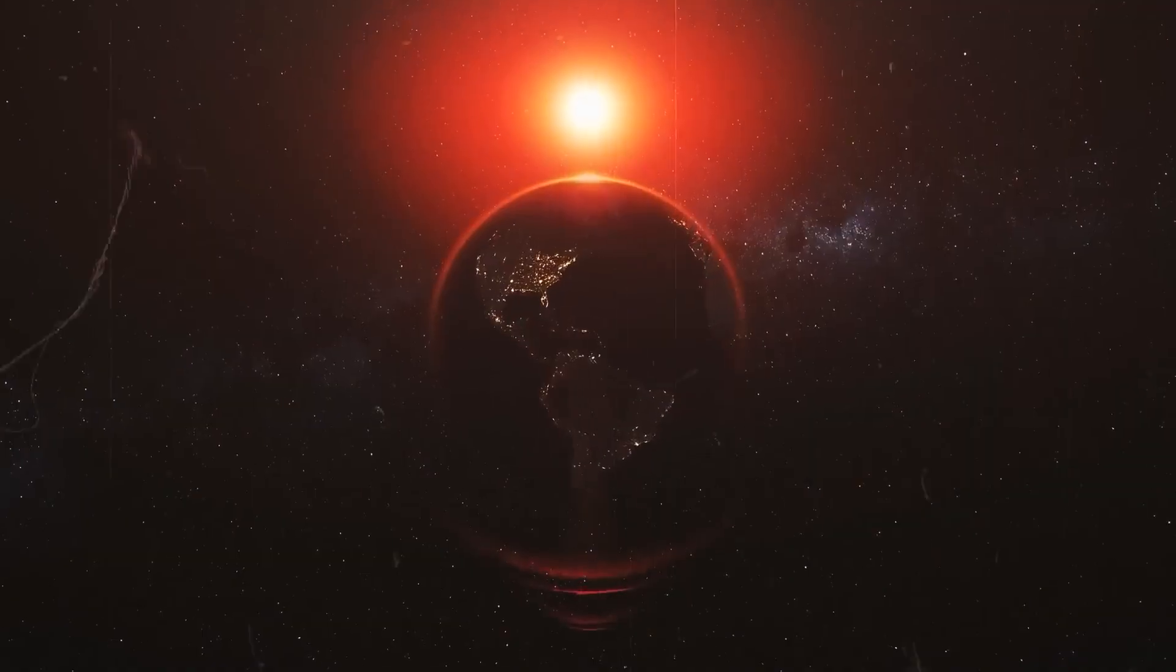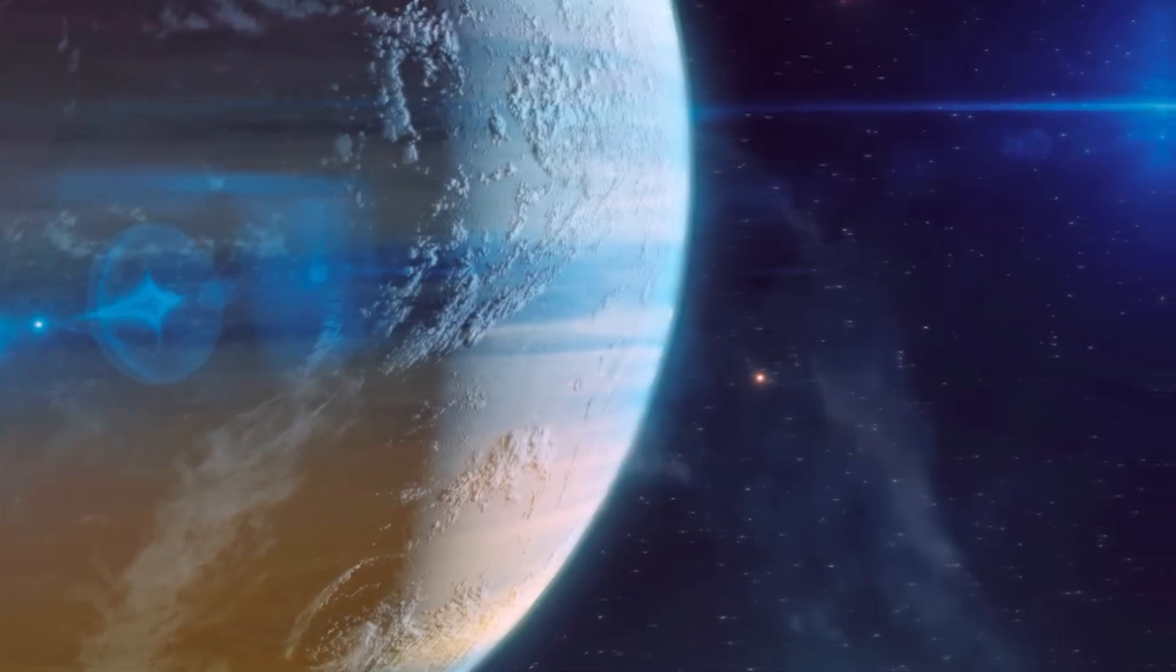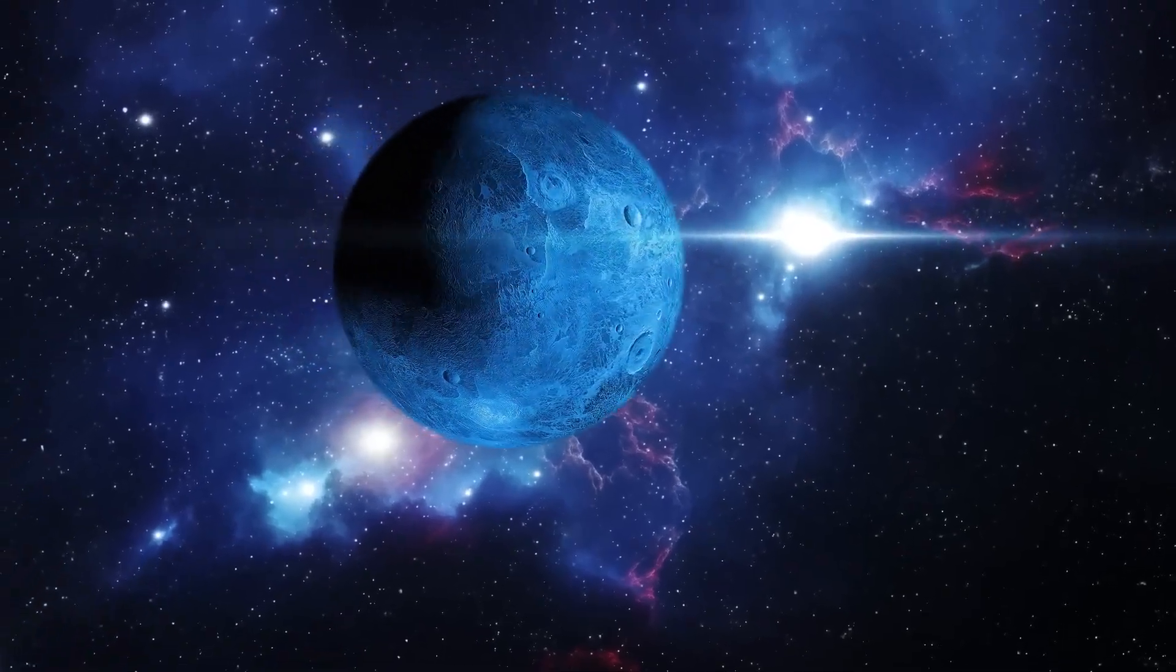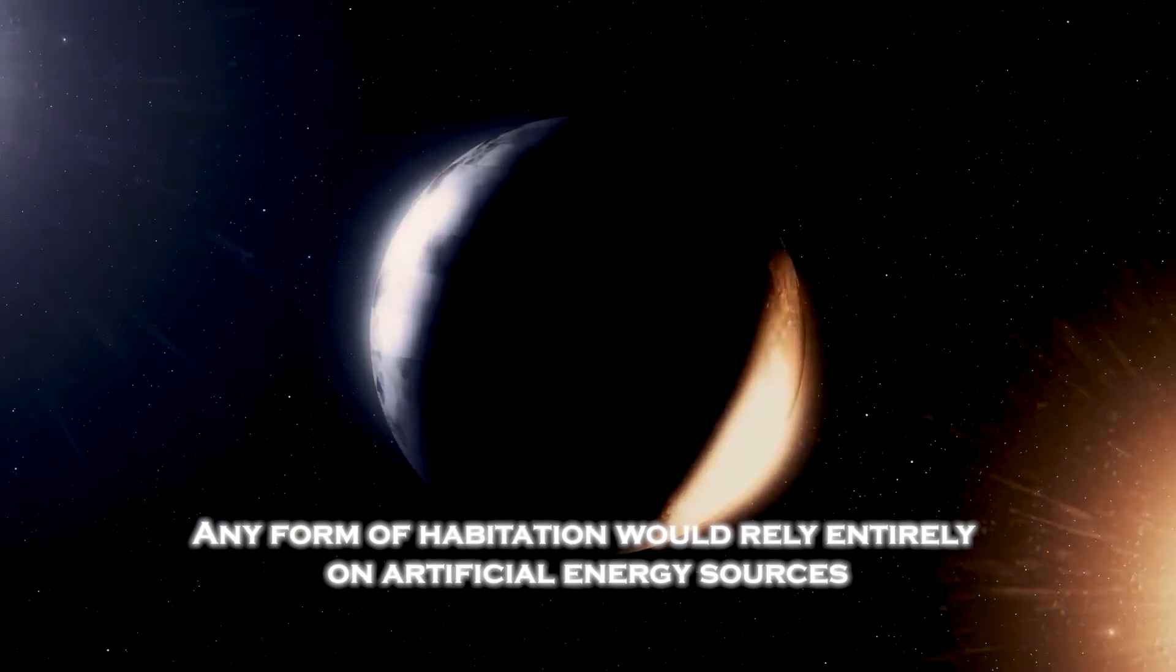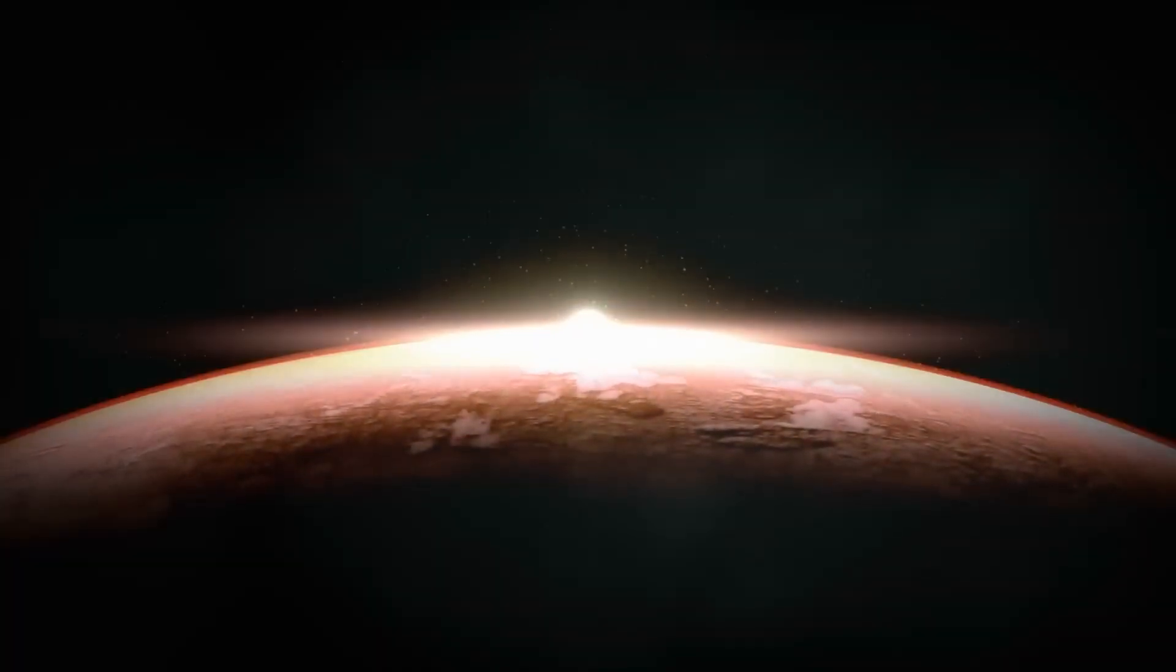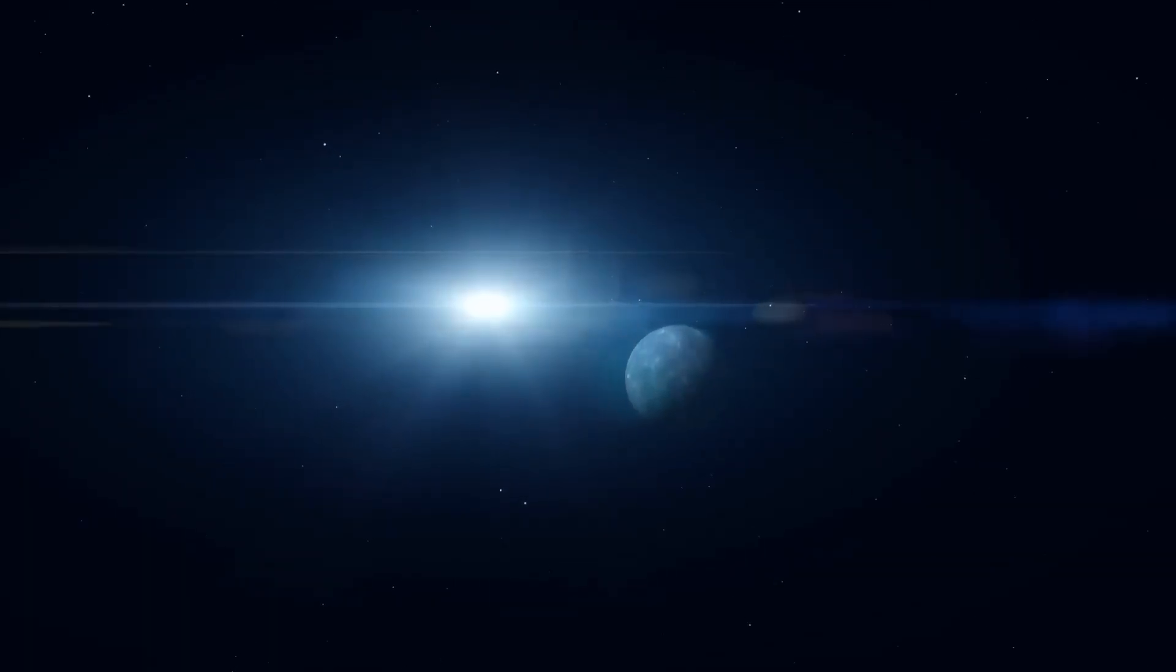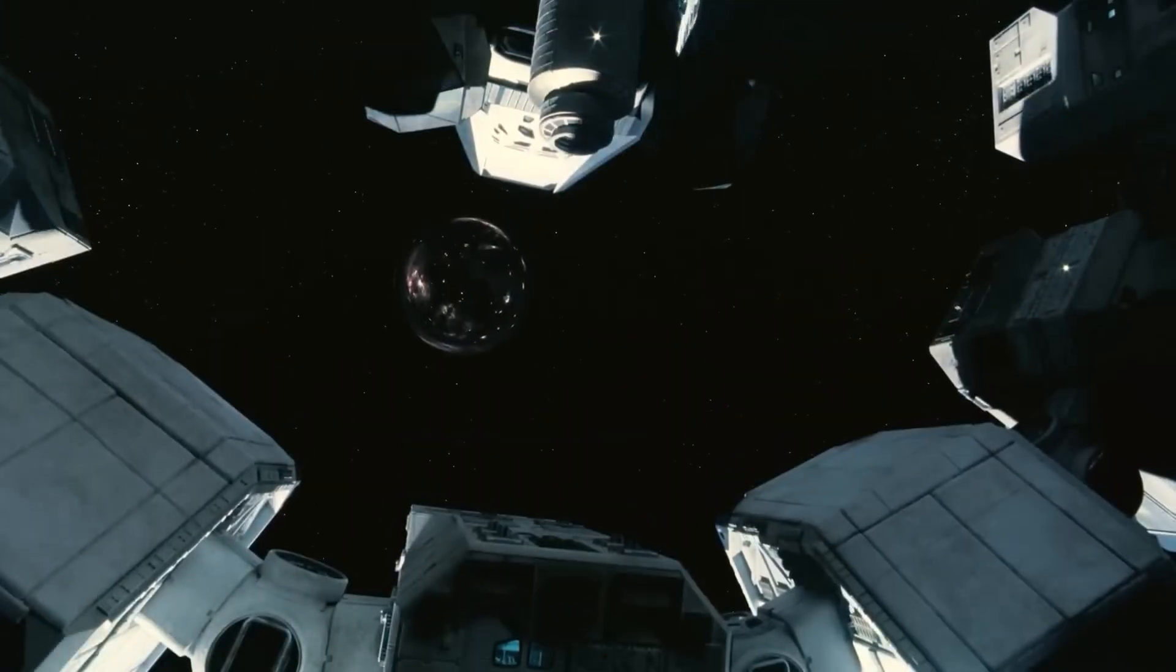Proxima b's tidal locking creates a planet of extremes, perpetual daylight on one side and freezing darkness on the other. The dark side's temperature could plummet to levels that make life as we know it impossible. Without a significant atmosphere to distribute heat, any form of habitation would rely entirely on artificial energy sources. Could a civilization have solved this challenge, creating systems to transport heat and power to their shadowed realms? Such an achievement would represent a level of engineering sophistication that surpasses anything on Earth, offering new insights into what advanced life might look like.